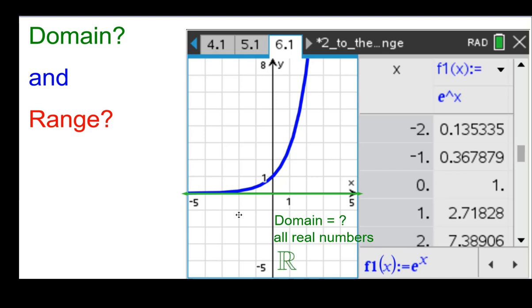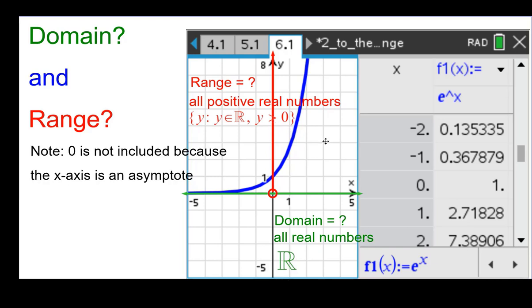The range will start with 0. It's not included, but everything above it is. These y values have either an x to the right or to the left. So we say these are the positive real numbers for the range. And we write it, the set of all y, such that y is a member of the reals, and y is strictly greater than 0. Note that 0 is not included again because the x-axis is an asymptote. So it's strictly greater than 0.